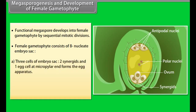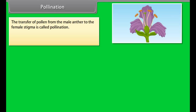The functional megaspore develops into the female gametophyte by sequential mitotic divisions. The female gametophyte consists of an 8-nucleate embryo sac: three cells — two synergids and one egg cell — at the micropylar end form the egg apparatus; three antipodal cells are formed at the chalazal end; and the central cell consists of two polar nuclei.